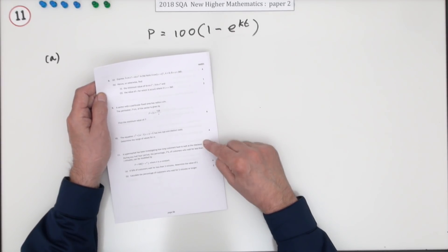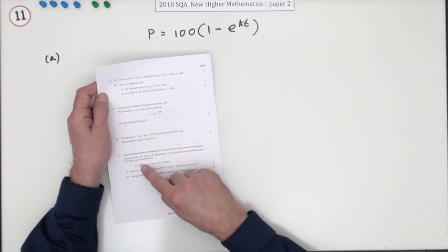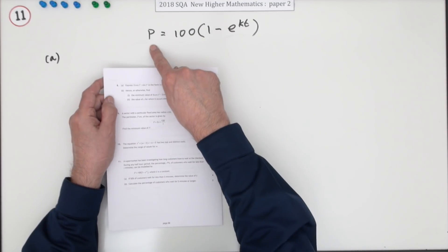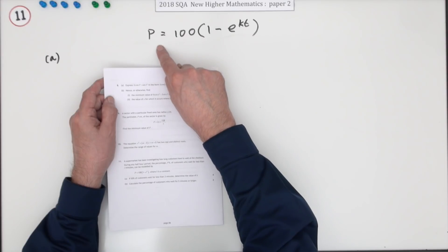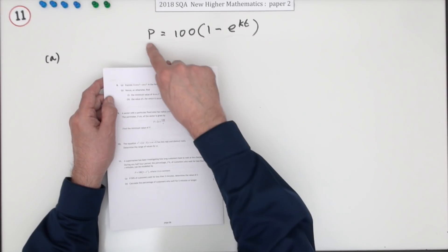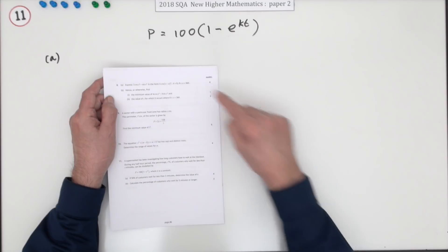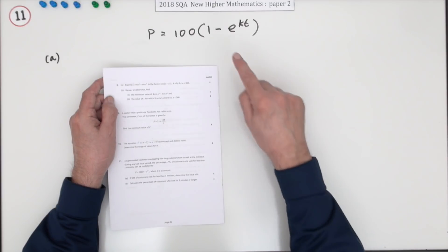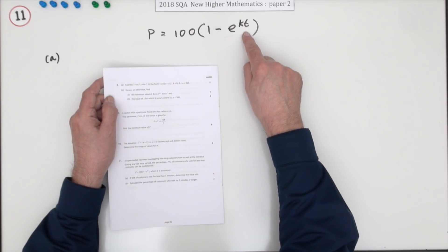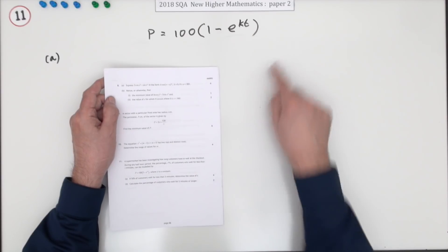It describes a situation in a supermarket waiting at the checkout. During any half hour period, the percentage p is the number of the percentage, so you don't write over 100, it's the actual value of the percentage who wait for less than t minutes, so t is in minutes, can be modeled by this equation.